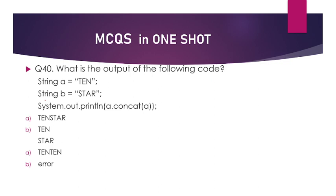What is the output of the following code? A is given as 10, B is given as star. You have to concat A with A — joining A to itself. A is 10, so concatenating A with A gives 10, 10. The answer is option number C, that is 10, 10. Note: there is a numbering mistake — it is C and the next one is D.